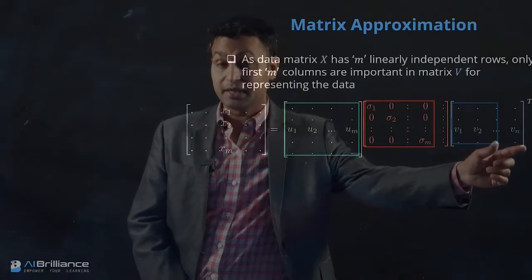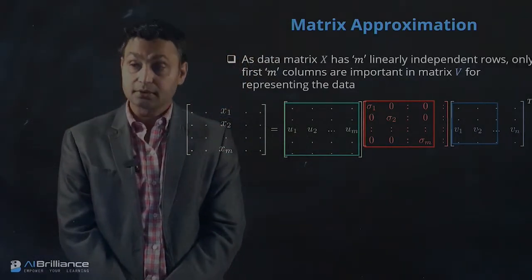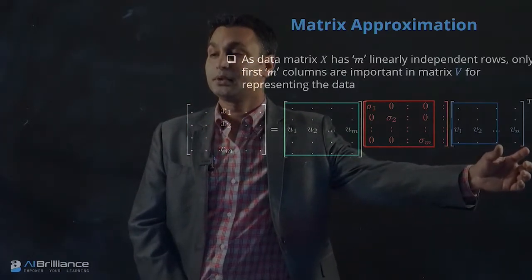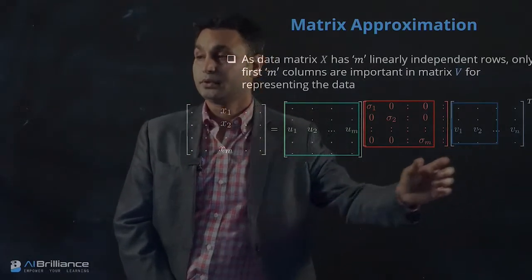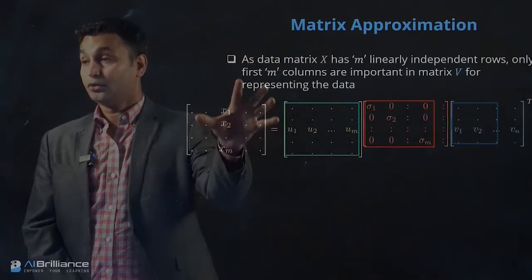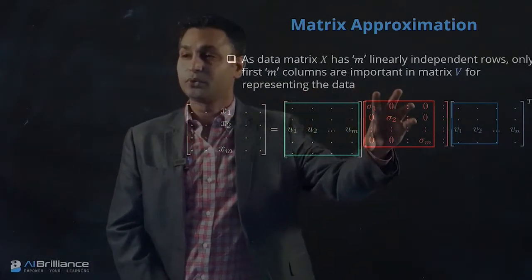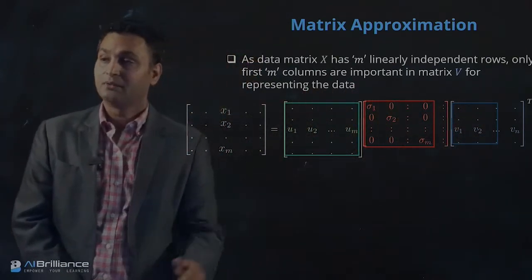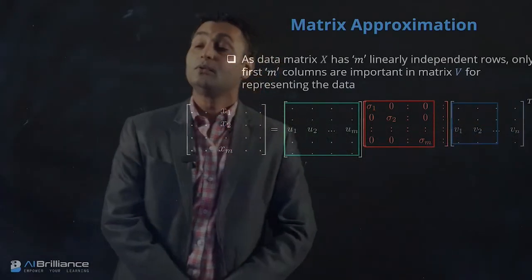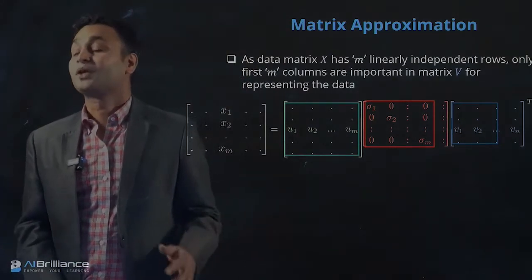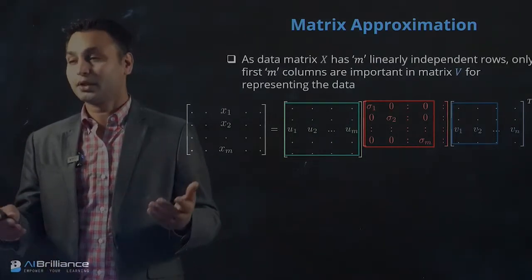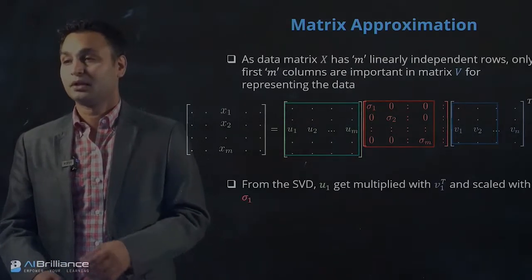The size of the V matrix is essentially n by n, and we are not going to be using most of the representation of V to represent this data. Since we have M linearly independent rows, we only use this portion of the factorization and can throw away the corresponding portions of the Sigma matrix and V-transpose matrix. This gives a very good representation of X and quickly reduces the number of dimensions needed.